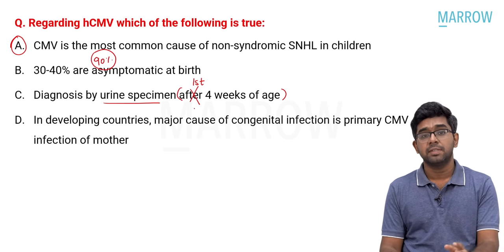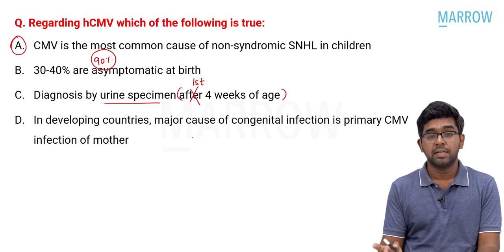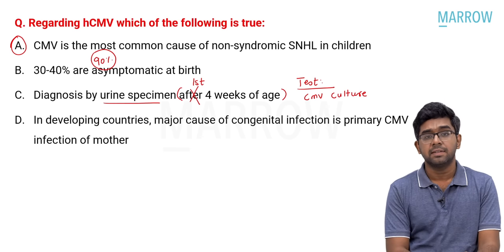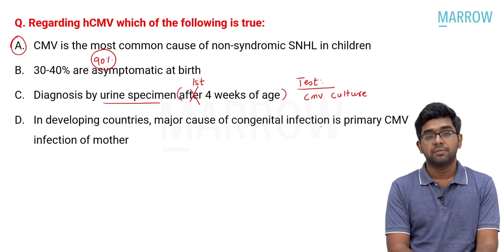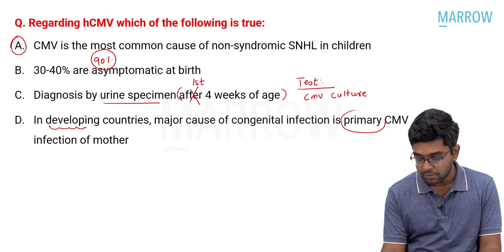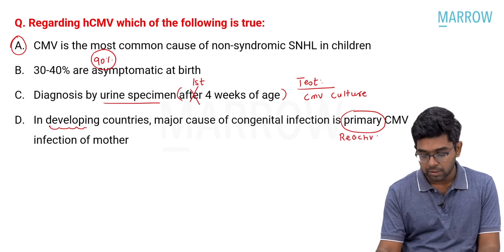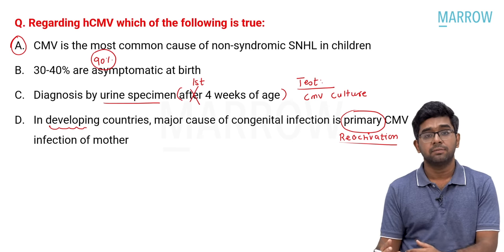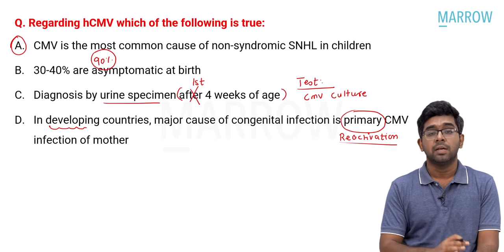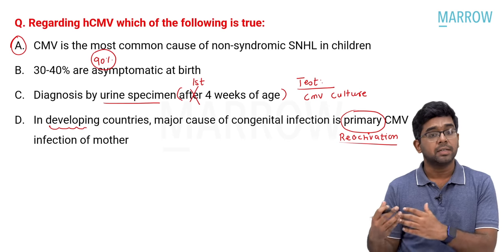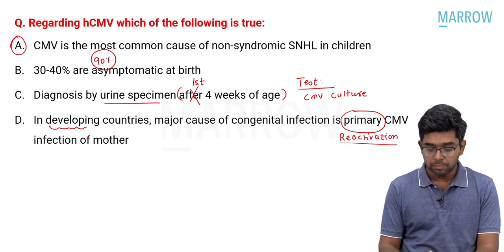In developing countries, the major cause of congenital CMV infection is reactivation of CMV infection, not primary CMV infection of the mother. In developing countries like India, most adults already have exposure to CMV in childhood, so primary infection occurs early. Mothers get reactivation of CMV infection. Characteristic features of congenital CMV include sensorineural hearing loss, periventricular calcification — a classical and unique feature — microcephaly, and chorioretinitis.